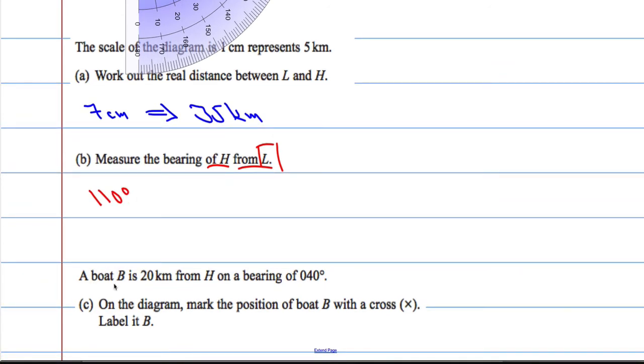Okay. The next part. A boat B is 20km from H on a bearing of 040. On the diagram mark the position of the boat B across X and label it B. Okay. So it's going to be 20km.